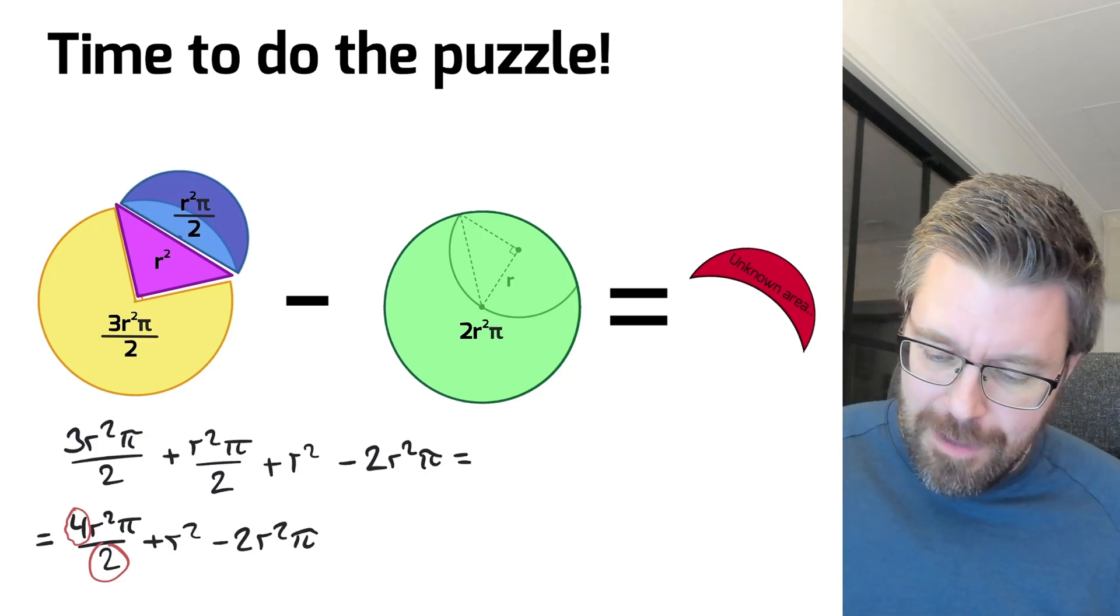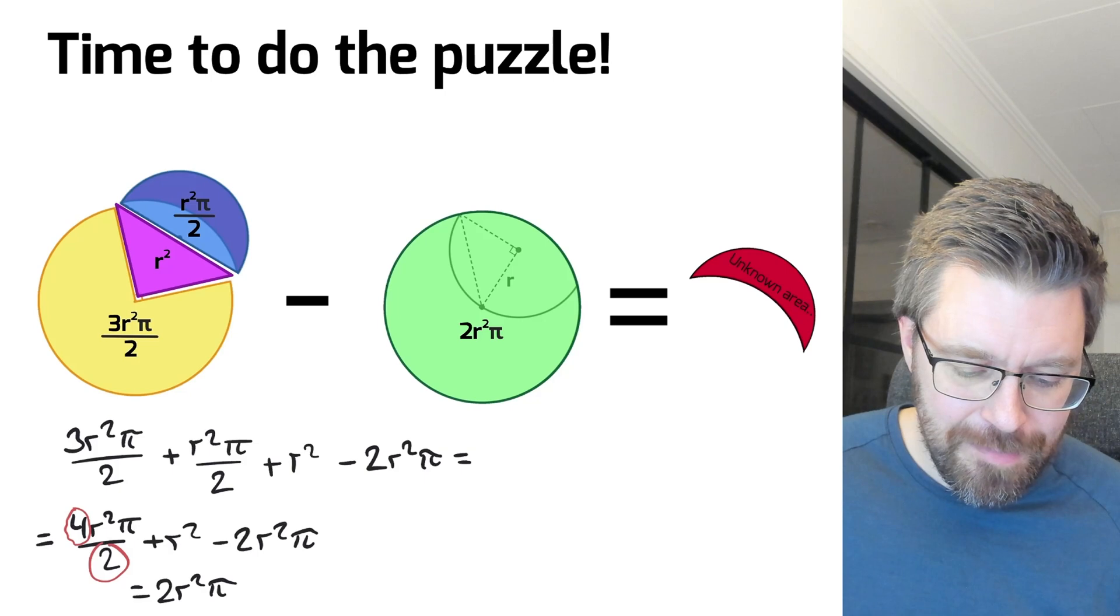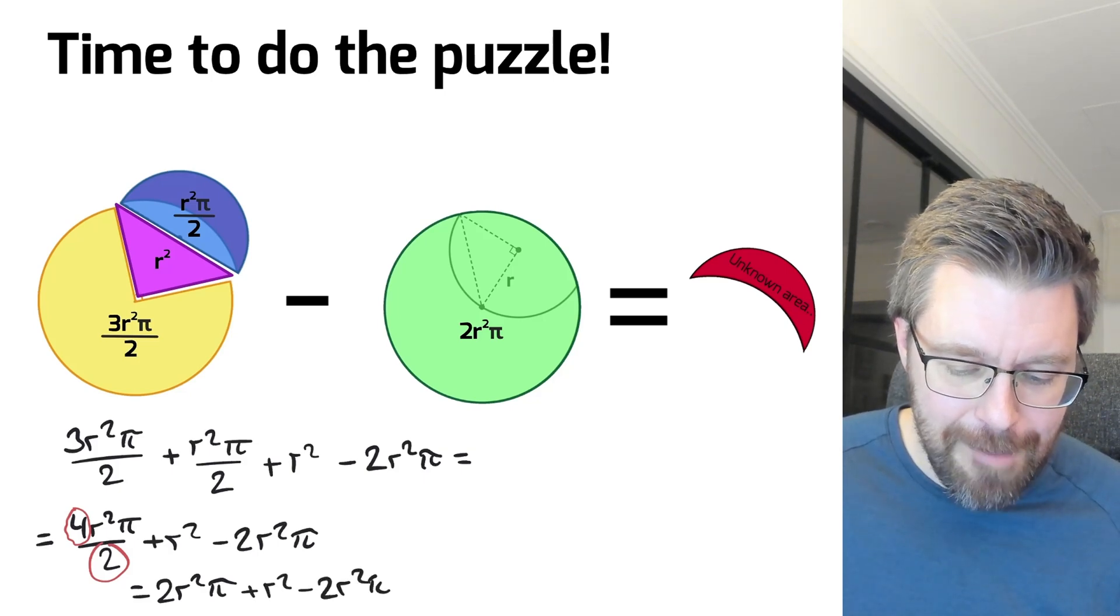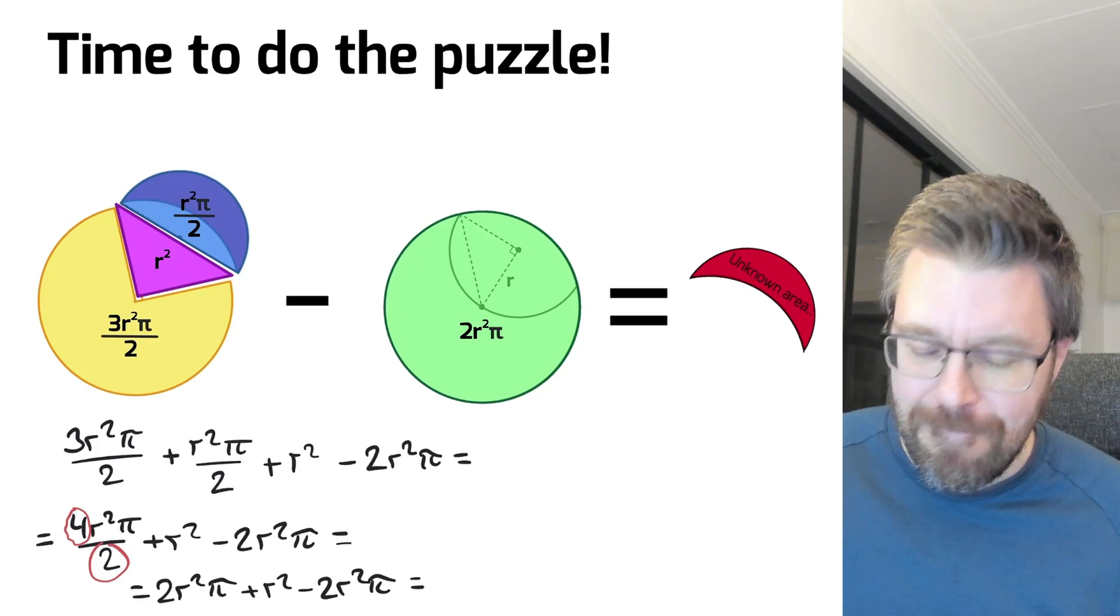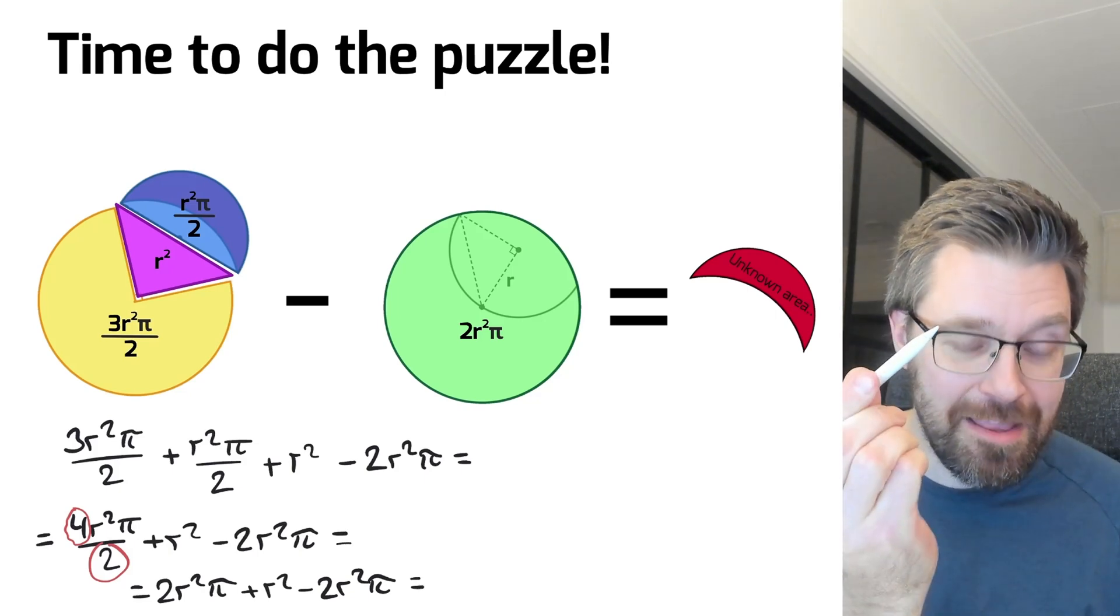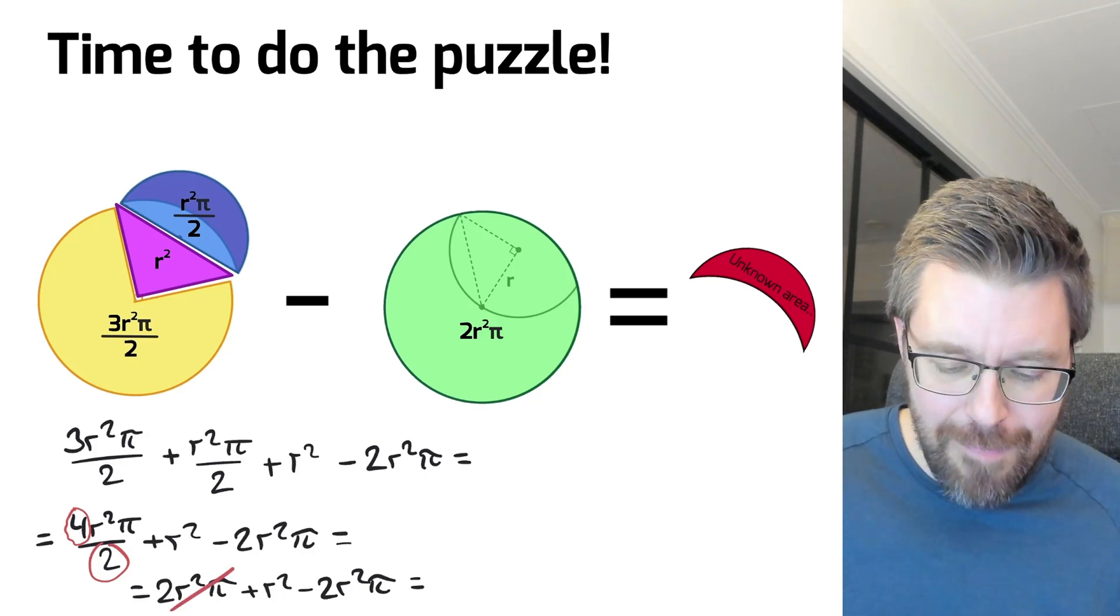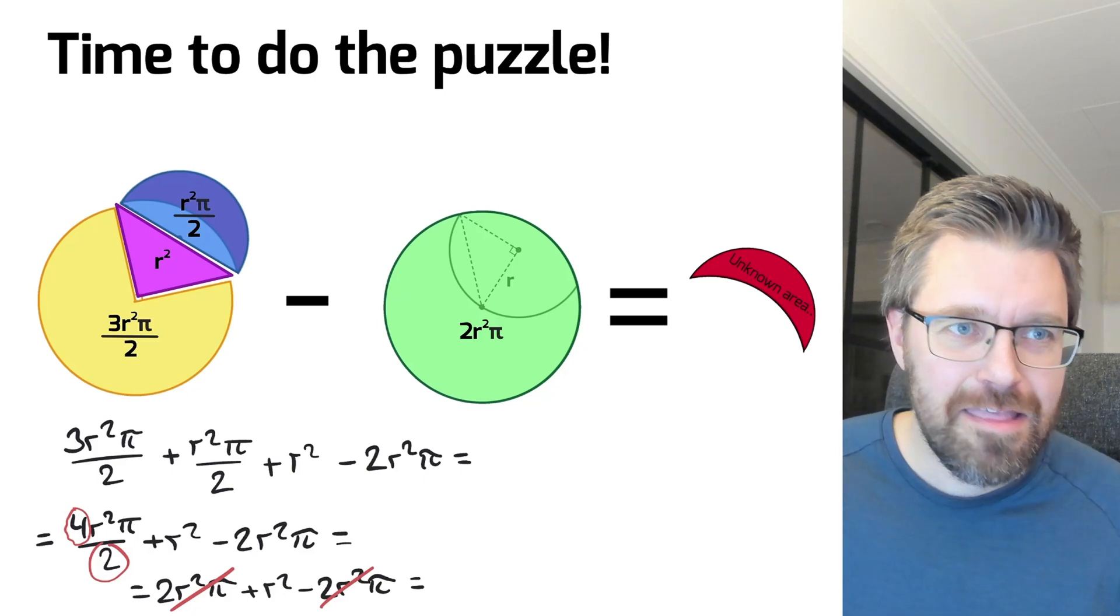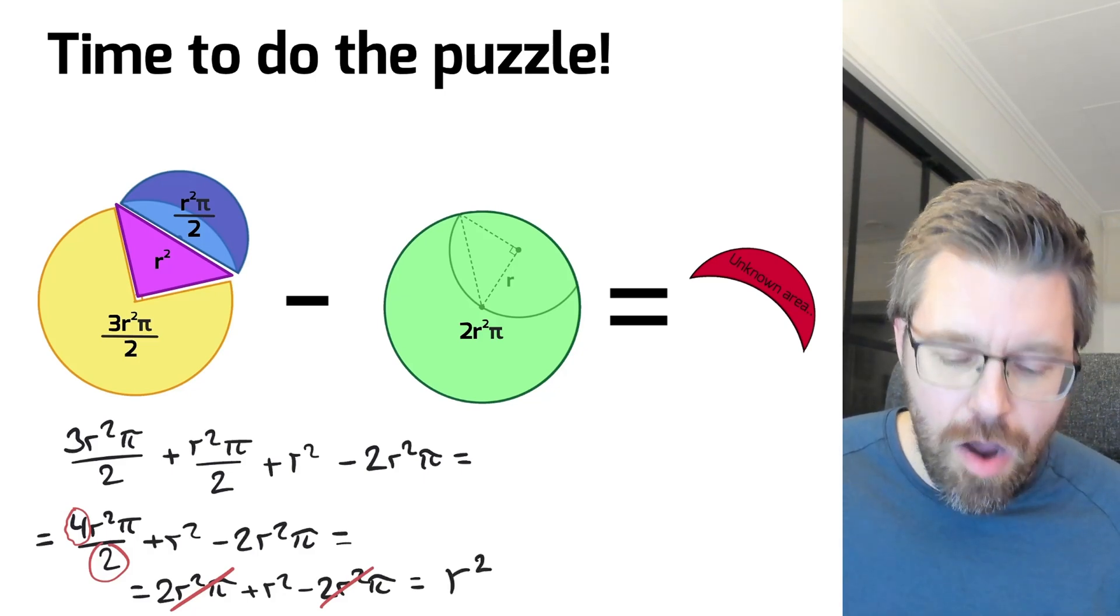Two r squared pi plus r squared and minus two r squared pi. And see what is happening. I take my red pen and cancel two r squared pi and minus two r squared pi. And the result is that the area of the red is r squared.